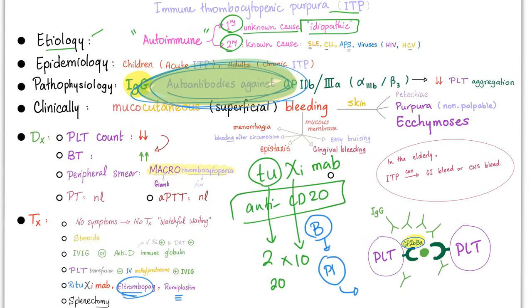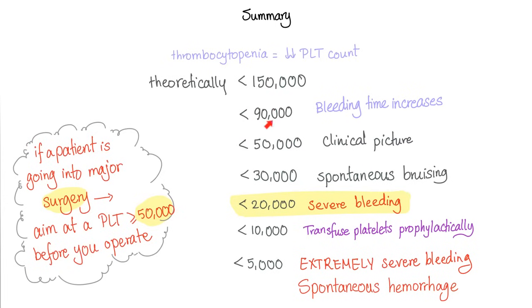The last resort is to remove the spleen. Severe bleeding usually does not happen until the platelet count drops below 20,000.